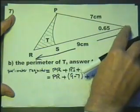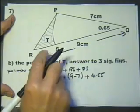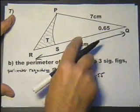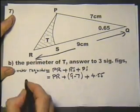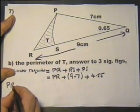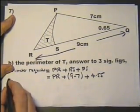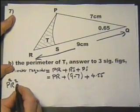Now we have a non-right-angled triangle where we've got two sides and the included angle. So that's actually the cosine formula. PR squared equals...